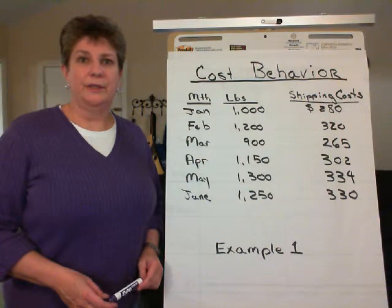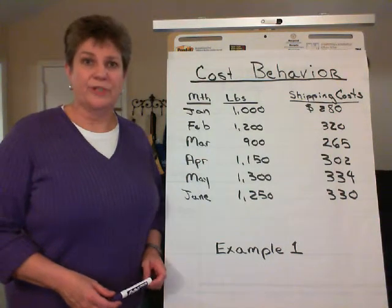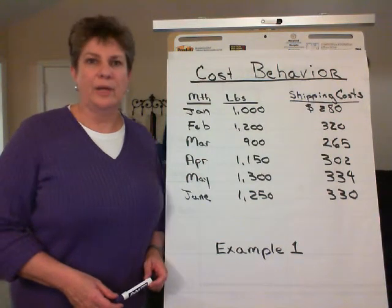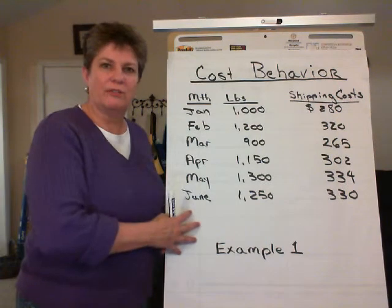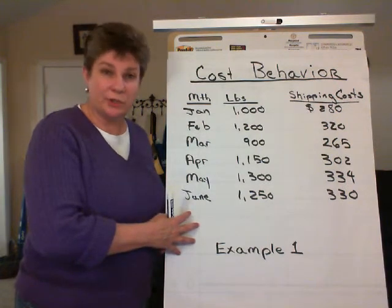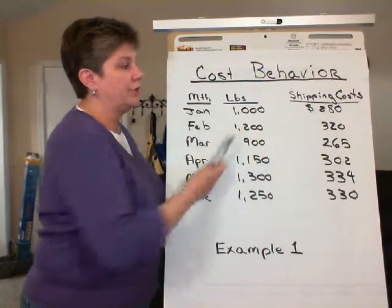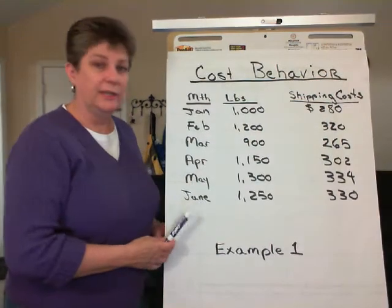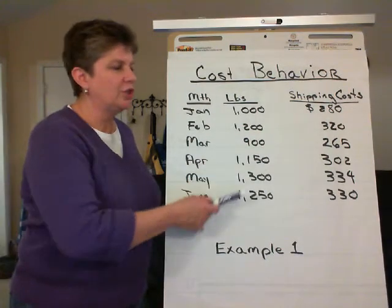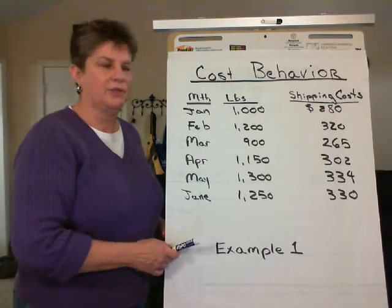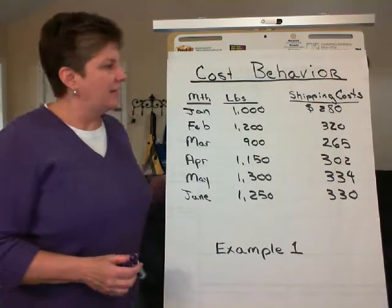Managerial accounting — scatter graph method for separating mixed costs. What we have in front of us is six months worth of data for shipping costs. We believe the activity driver causing shipping costs to change is number of pounds shipped.